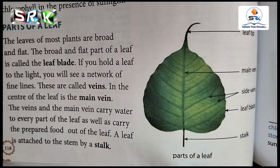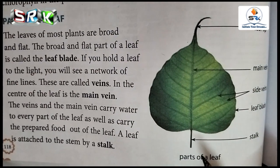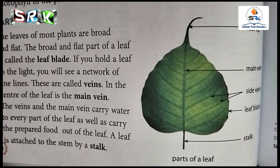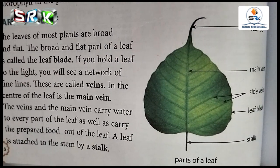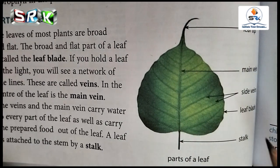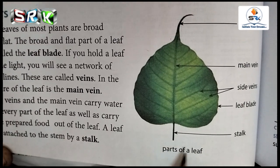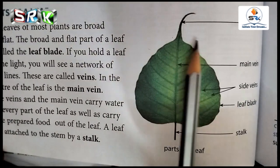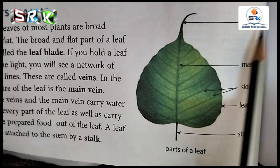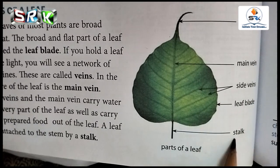Okay children, for homework you are going to draw a leaf and mark its parts. Listen carefully — you have to draw the leaf and label: leaf tip, main veins, side veins, leaf blade, and stalk.